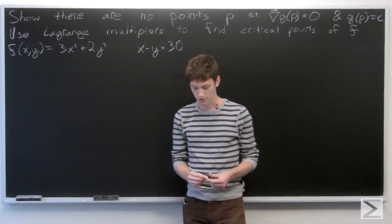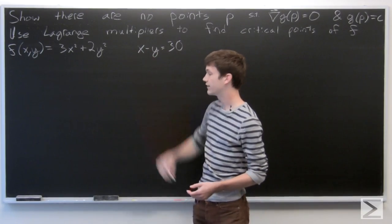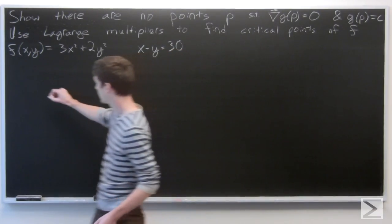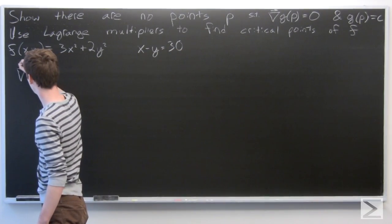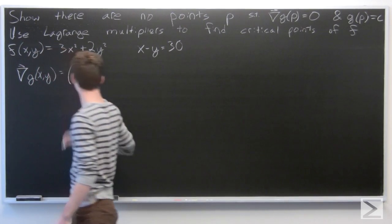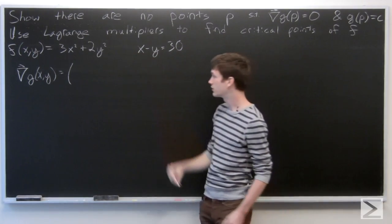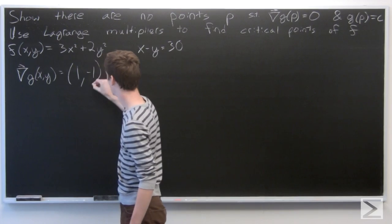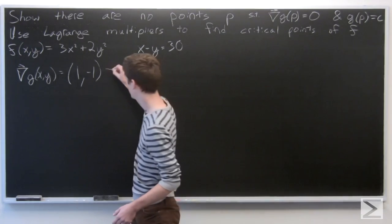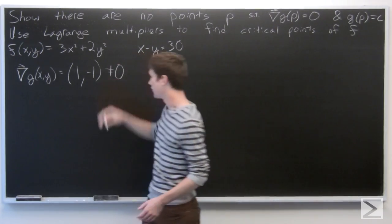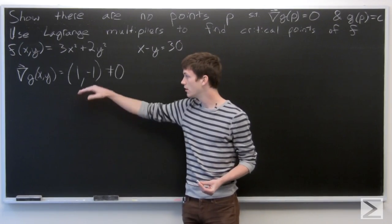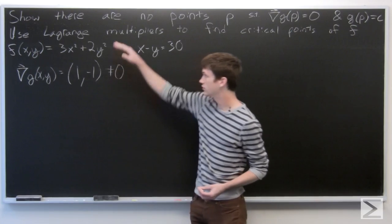First, we want to show that for any point that satisfies our constraint, the gradient vector at that point is not equal to 0. So we'll take the gradient vector of g. Since g = x - y, our gradient vector is (1, -1), which is never going to be equal to 0. So that means for any point that satisfies our constraint, the gradient vector is going to be non-zero, which shows our first part.